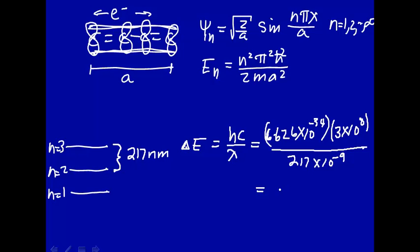We put these into our calculator, we get 9.17 times 10 to the minus 19th joule. So this energy level separation is 9.17 times 10 to the minus 19th joule. That's the energy level separation between those two.